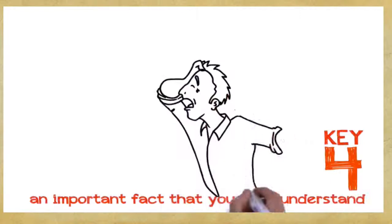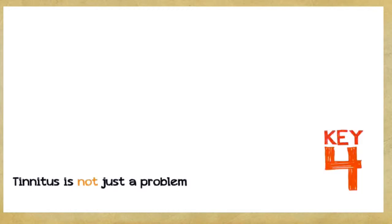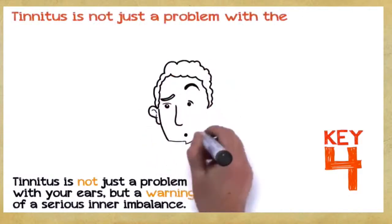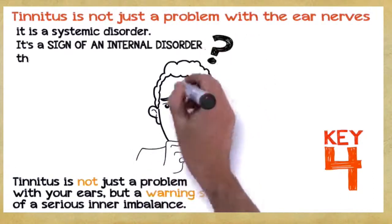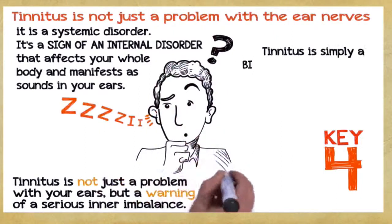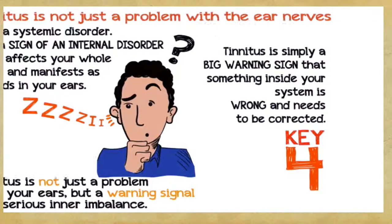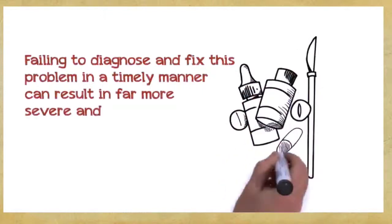Key number four. This is a very important fact that you absolutely must understand if you want to save hundreds or even thousands of dollars. Tinnitus is not just a problem with your ears, but a warning signal of a serious inner imbalance. In the vast majority of cases, tinnitus is not just a problem with the ear nerves, it's a systemic disorder. It's a sign of an internal disorder that affects your whole body and manifests as sounds in your ears. Tinnitus is simply a big warning sign that something inside your system is wrong and needs to be corrected.